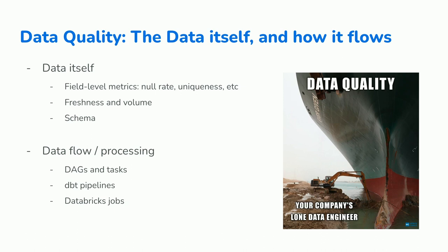Then there's freshness and volume, which are more related to metadata. Freshness is about when the table was last updated — if you have a table updated every day at 5pm and it's 5pm and it's not updated yet, you have a freshness problem. The same with volume, which can be bytes or rows, and you have expectations about the size of your table. And schemas, which are changing all the time, but you might find unexpected schema changes, in which case you have a problem.